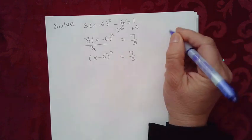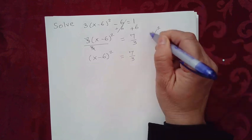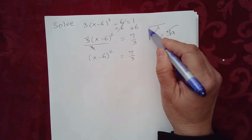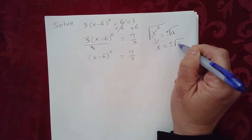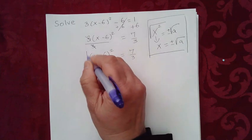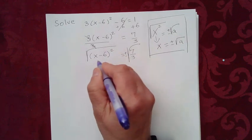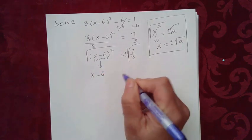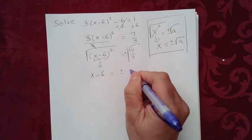Now, solving using the square root property: you have something like X squared equals a, and you just take the square root on both sides with plus or minus. The square root cancels the square, and you get x equals plus or minus a. We're going to do the same thing here — take the square root on both sides with plus or minus. The square cancels the square root, and what comes out is x minus 6 equals plus or minus square root of 7 over 3.